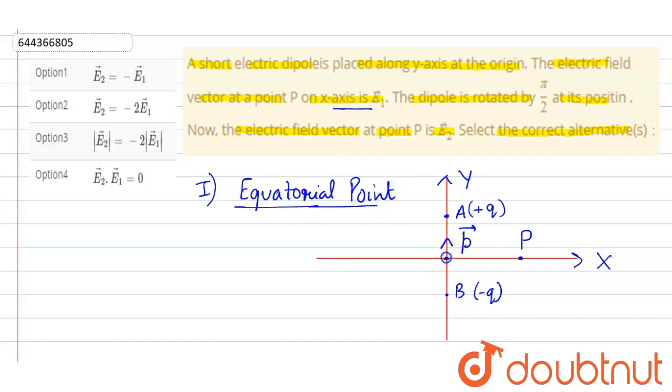Suppose its distance from origin, let us suppose it is d. So we can write here the E1 vector will be equal to minus kp upon d cube.